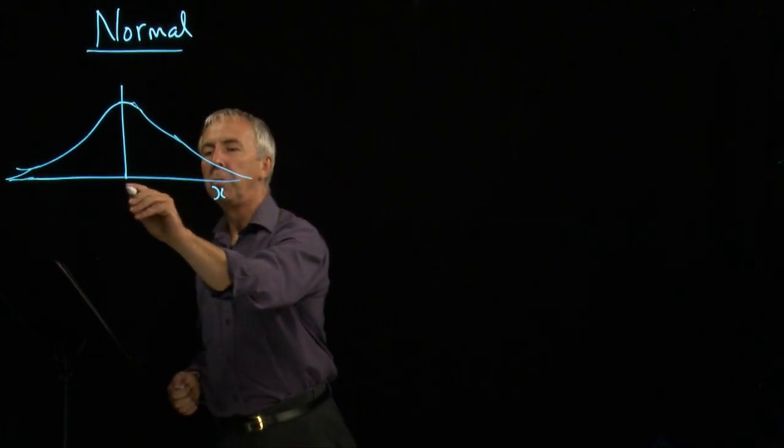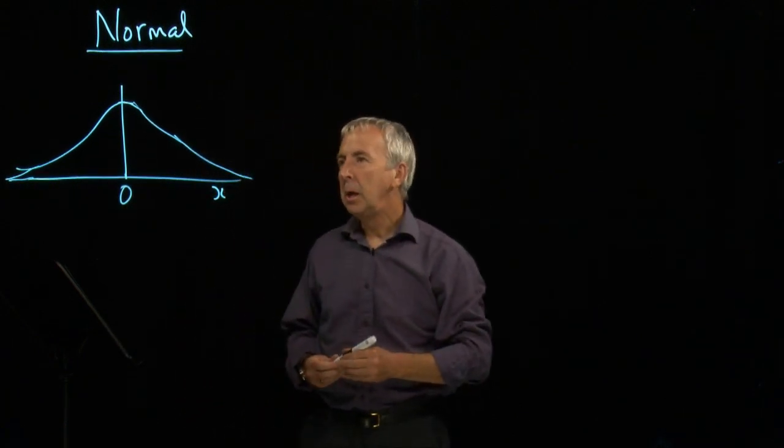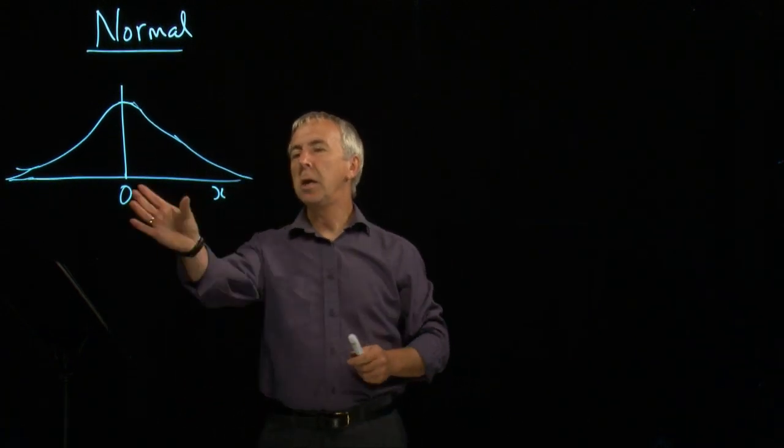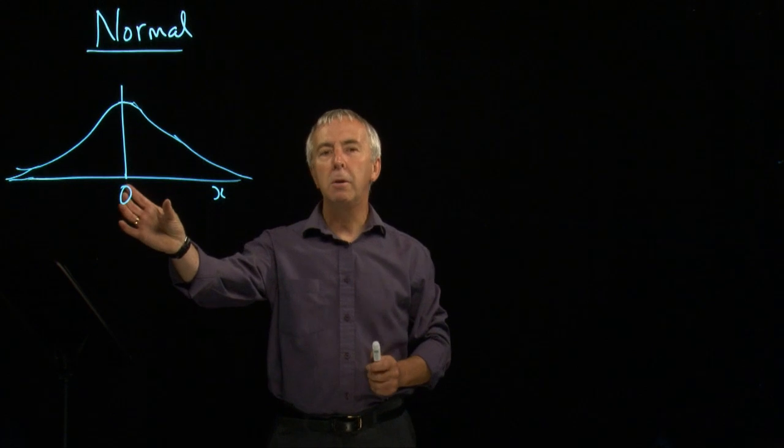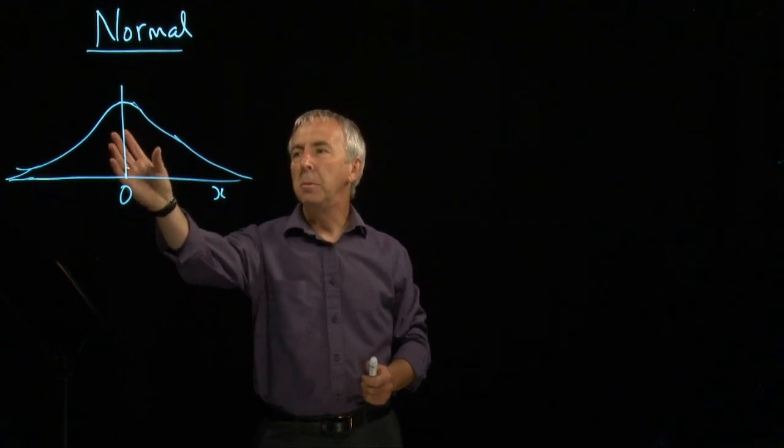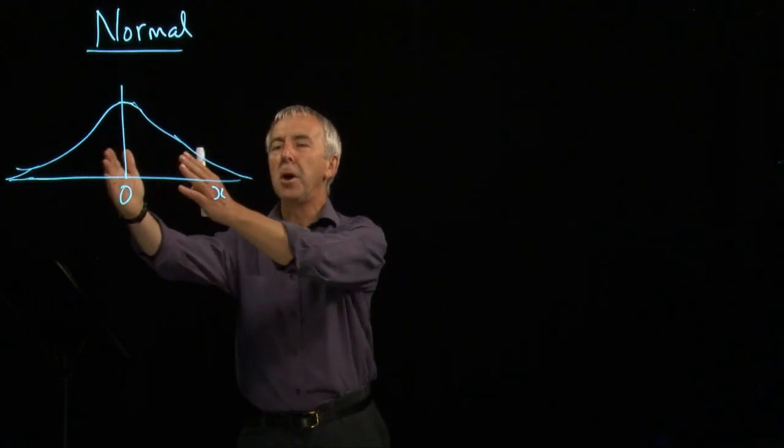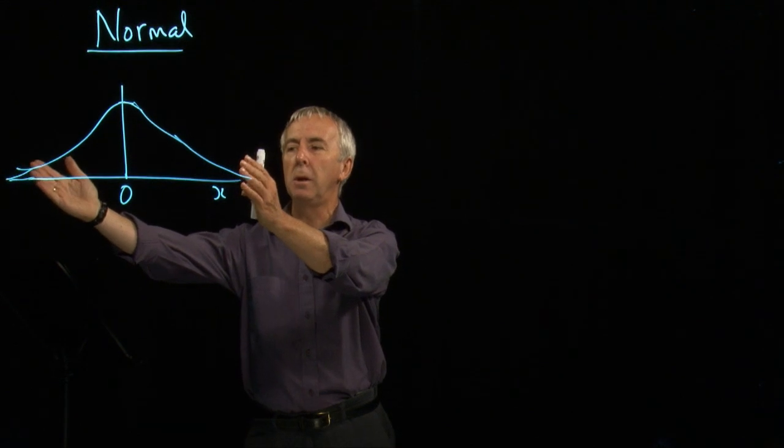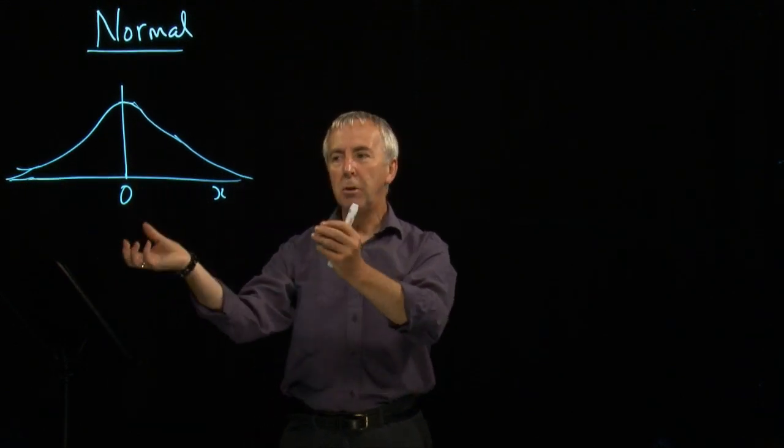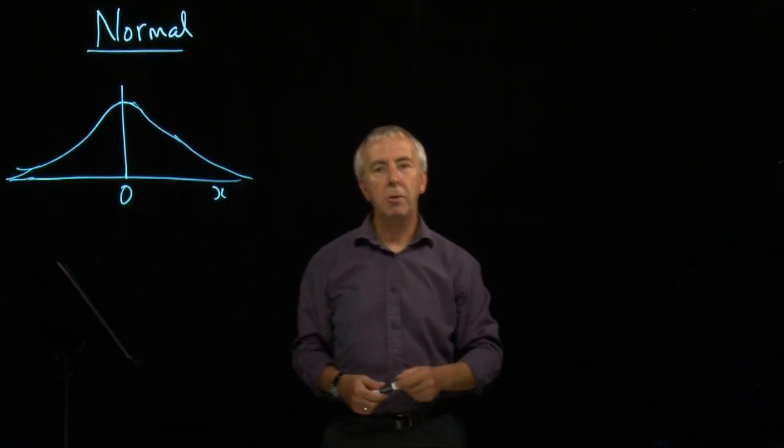It applies to all sorts of variables and it's saying essentially that the most probable value of the variable is in the middle and then as you go further out in either direction from the middle, the probability decreases. So it applies, for example,